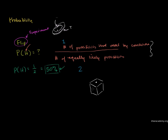A dice has six faces: one, two, three — many different sides. So the probability of getting a 1 in a fair dice is 1 by 6.